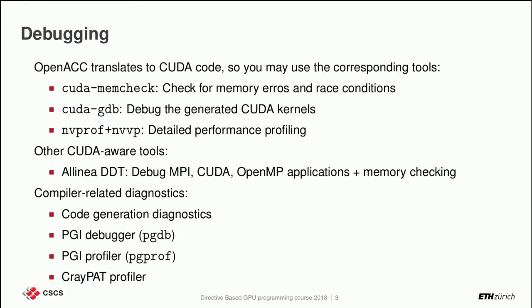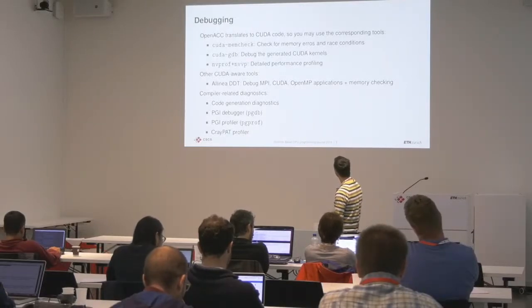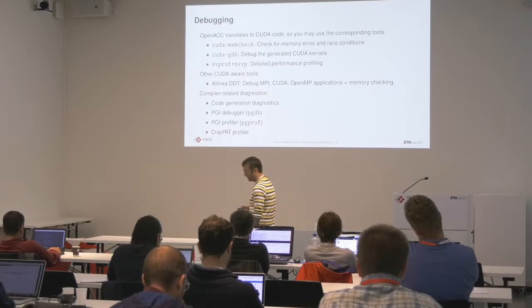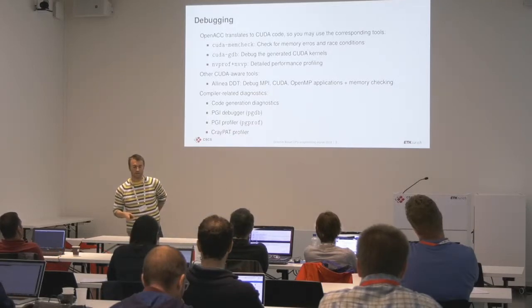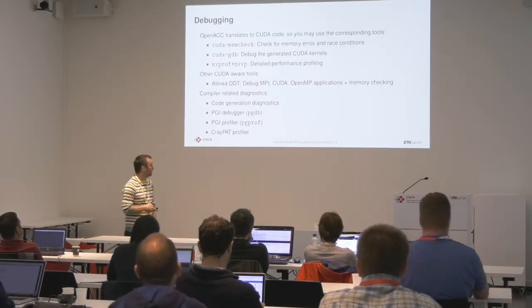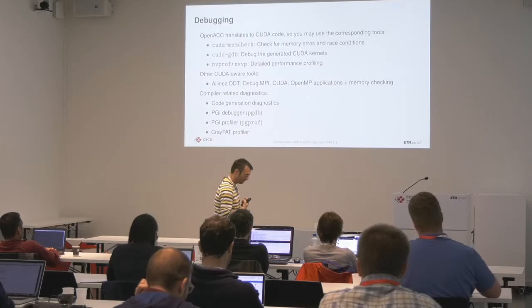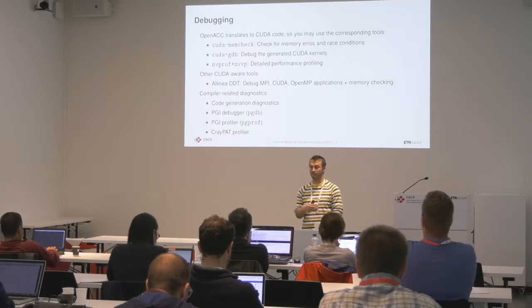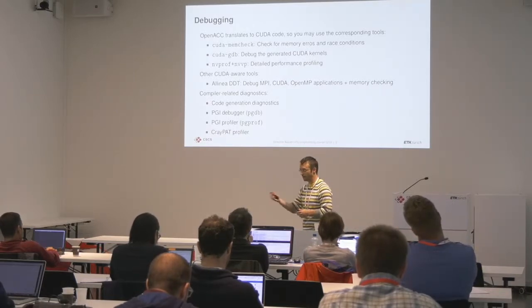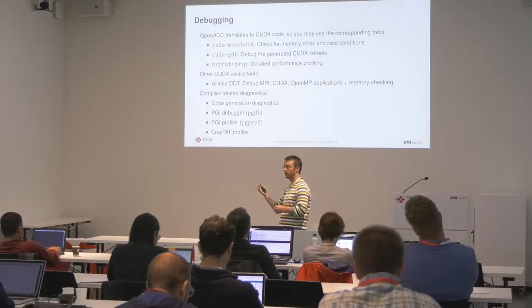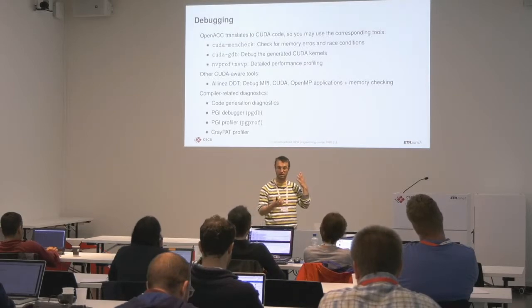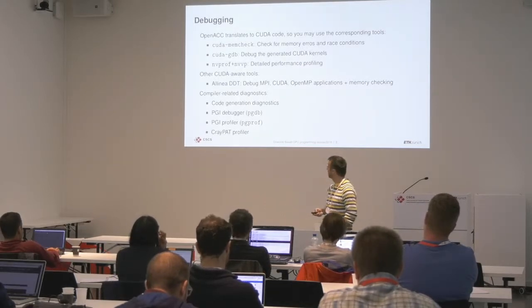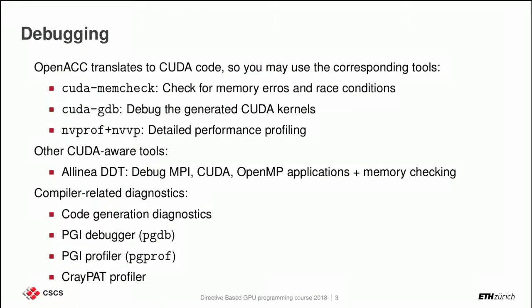You can use CUDA memcheck, which checks for memory errors and race conditions. It's like the Valgrind tool for GPUs. You'd typically use it when you get a weird error and want to check for invalid reads or writes — because writing out of bounds can lead to segmentation faults or corrupt something else and make things really bad. Another tool is the CUDA debugger, which lets you debug the generated CUDA kernels.